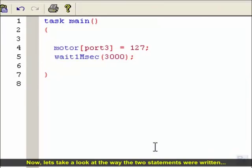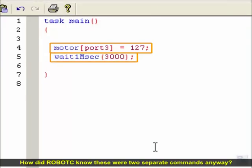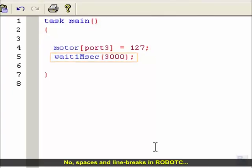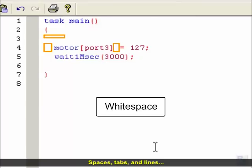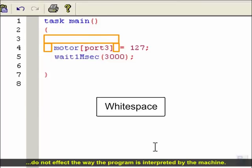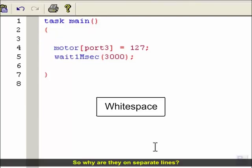Now, let's look at the way the two statements were written. How did Robot C know that these were two separate commands anyway? Was it because they appeared on two different lines? No. Spaces and line breaks in Robot C are only used to separate words from other multi-word commands. Spaces, tabs, and lines don't affect the way a program is interpreted by the machine. So why are they on separate lines? For the programmer.